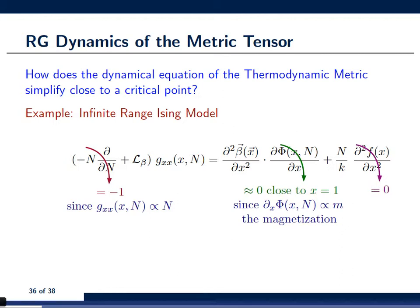Now, on the right-hand side, we notice that the term dphi/dx is vanishing close to the critical point, because it's proportional to the magnetization. Also, we notice that, essentially by coincidence, the term d squared f/dx squared is also vanishing.